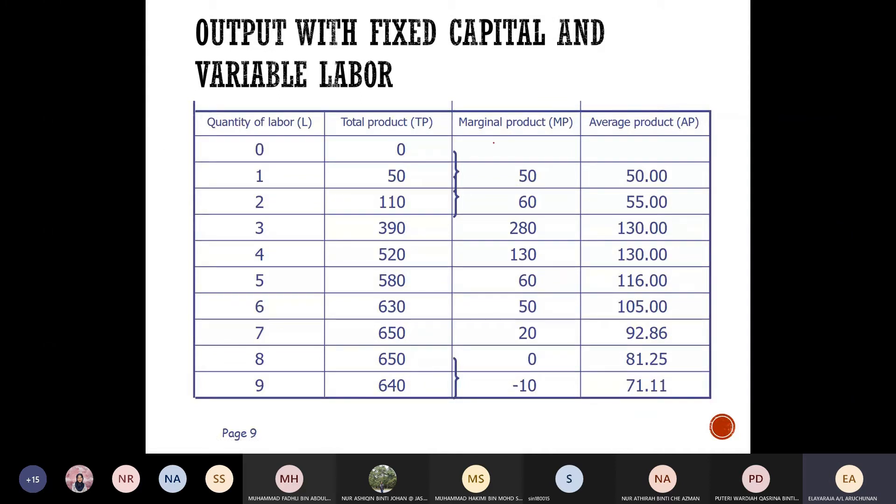So for instance, you can see the marginal product, usually we indicate as dq over dl, so in other form, it's change in q. This is in the derivative form, derivative of l. So this will be called marginal product, MP.